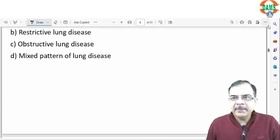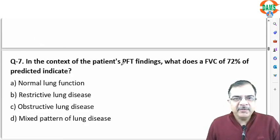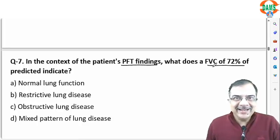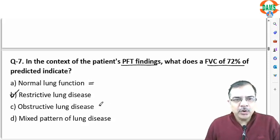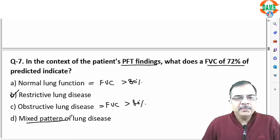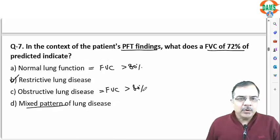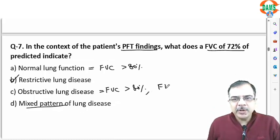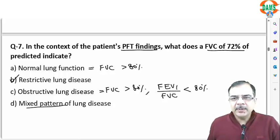Question 7: a patient has a PFT finding with FVC of 72%, which is less than the normal 80%. This is more suggestive of restrictive lung disease. In normal and obstructive lung disease, FVC is more than 80% of the predicted value. In mixed pattern (restrictive and obstructive), FVC is also reduced. In obstructive pattern, the key finding is FEV1/FVC ratio less than 80% of predicted or an absolute value less than 0.7.